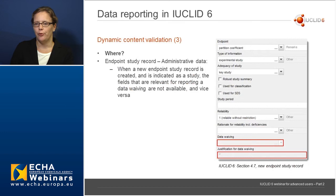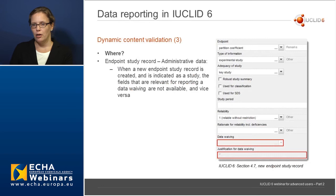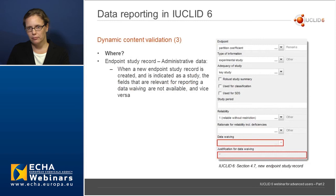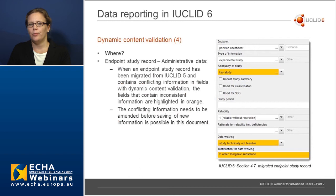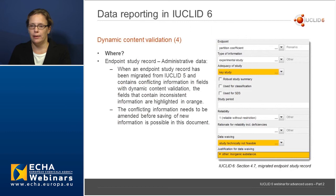In endpoint study records, the administrative data part works as follows: when a new endpoint study record is created and the user indicates that it is for reporting information from a study, then the fields relevant for reporting data waiving information and justifications are unavailable. If this record was created in IUCLID 5, it's possible that the user could have entered inconsistent information filling in both study information and data waiving fields. When such a document is migrated to IUCLID 6, the incompatible fields will be highlighted in orange, and this conflict must be corrected before saving.